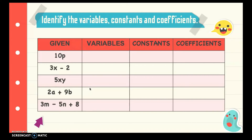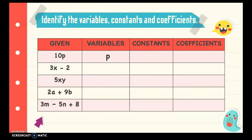Let's identify the variables, constants, and coefficients. For 10p: the variable is p, there is no constant since there is no standalone number, and the coefficient is 10. For 3x minus 2: the variable is x, the constant is negative 2 (the sign follows the operation), and the coefficient is 3.